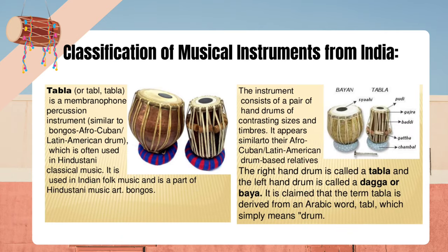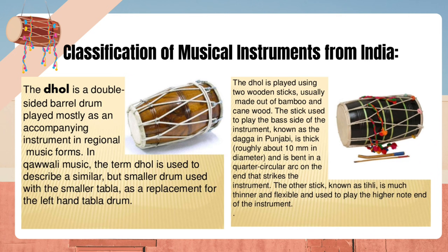Tabla is a membranophone percussion instrument, similar to Bongo drums (Afro-Cuban/Latin American), which is often used in Hindustani classical music and is a part of Indian folk music. The instrument consists of a pair of hand drums of contrasting sizes and timbres. The right hand drum is called a tabla and the left hand drum is called a daga or baya. The term tabla is claimed to be derived from the Arabic word 'tablau,' which simply means drum. The dhal is a double-sided barrel drum played mostly as an accompanying instrument in regional music forms, and in Kwe Lai music the term dhal describes a smaller drum used as a replacement for the left hand tabla drum.